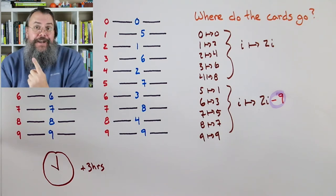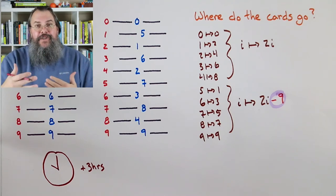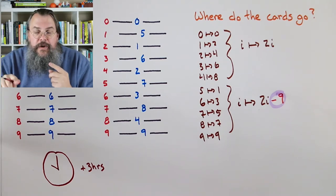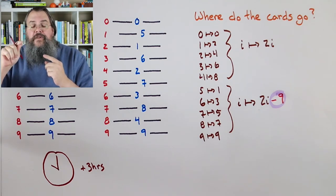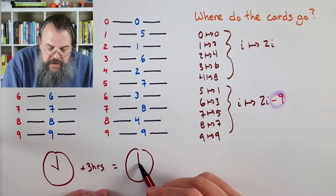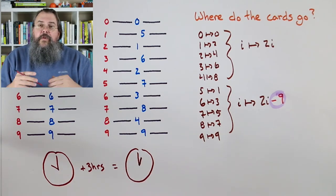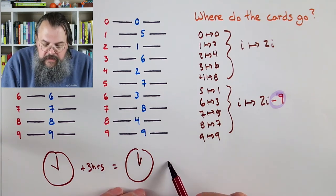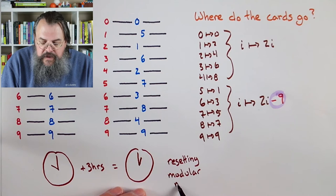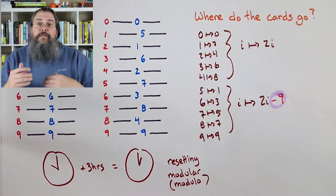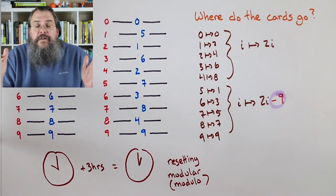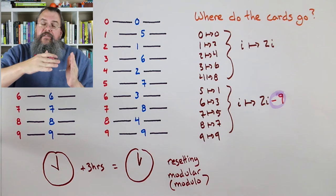Let's talk about the bottom half. Where does 5 go to? Well 5 went to 1. It's not really doubling, is it? How about 6? Well that went to 3. And 7, that went to 5. And 8, well that went to 7. And 9, well that went to 9. This one's a little bit more curious because it doesn't feel like doubling, does it? You don't double 5 to get 1 normally. What's going on? What's the rule?